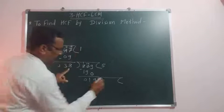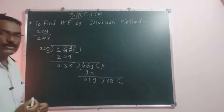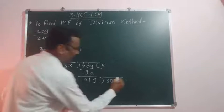Now divide 38 by 19. 19 twos are 38. We get remainder 0.